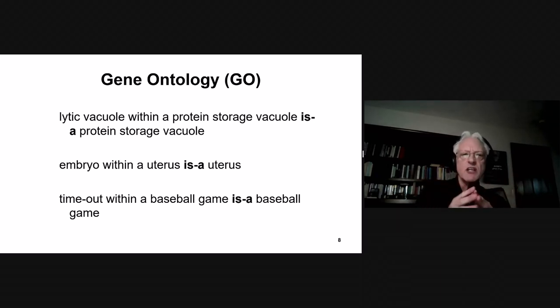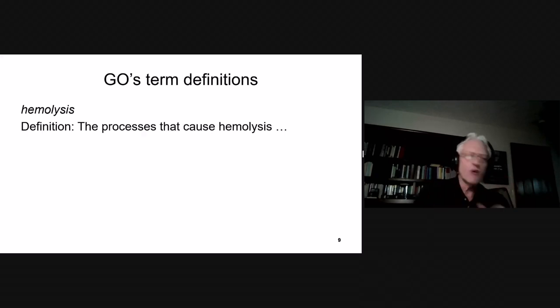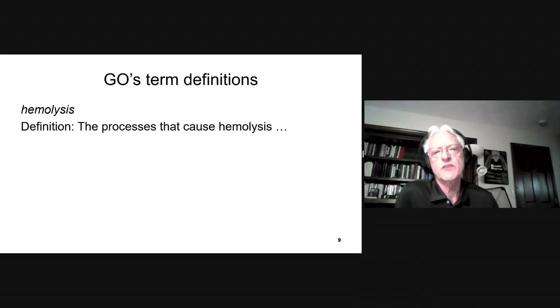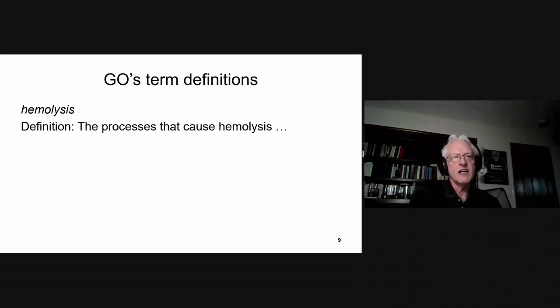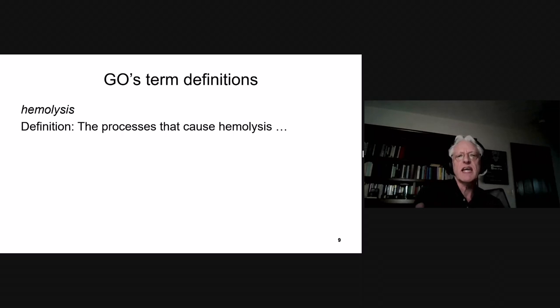The first thing I realized about it was that it was full of mistakes of a logical nature, which a philosopher learns about in the first logic class. This is a circular definition. It cannot tell you anything about the meaning of hemolysis because the word is used in the definition.